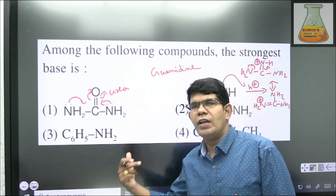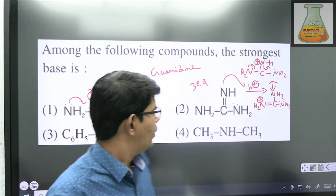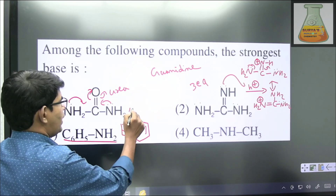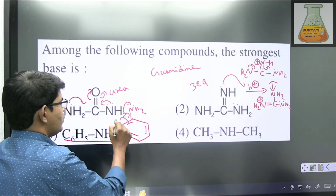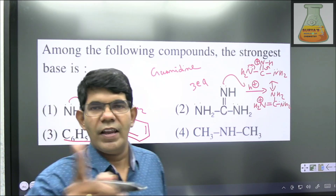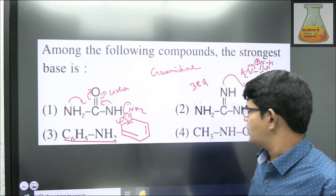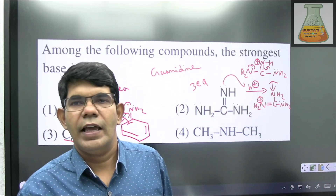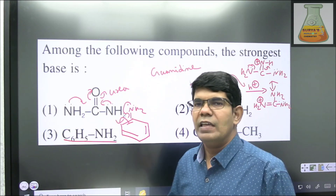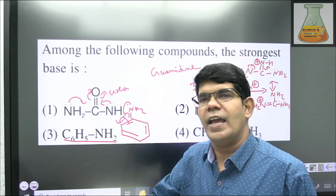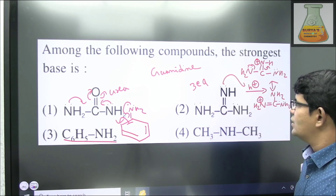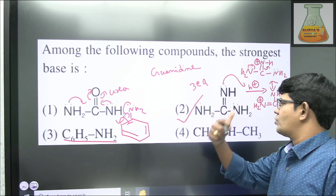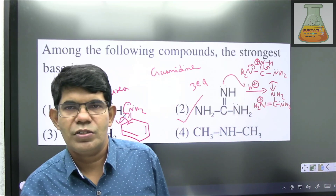Before concluding, let us look at the third and fourth options. The third compound is aniline — the lone pair on nitrogen actively involves in resonance and is unavailable, making it a weak Lewis base. The fourth is an aliphatic amine, which is relatively stronger than aromatic amines, but not stronger than guanidine. Guanidine is one of the strongest nitrogenous bases known. So the answer is the second compound.